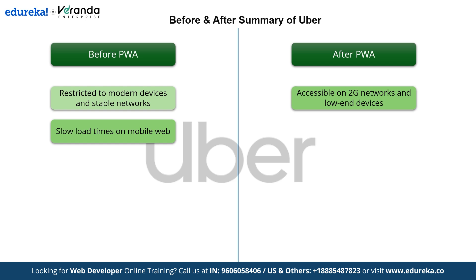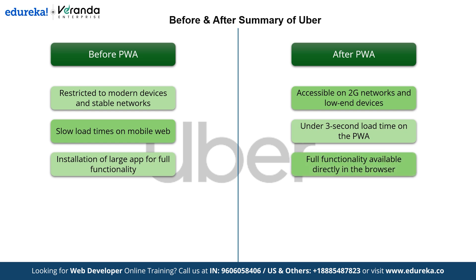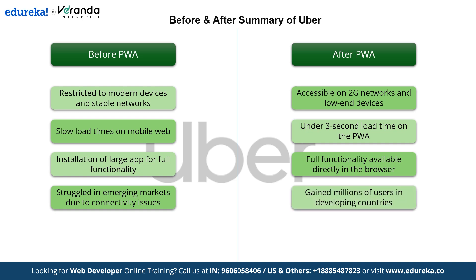Before Uber adopted progressive web apps, the mobile app faced slow load times, frustrating users and leading to a subpar experience. After implementing progressive web apps, load times were dramatically reduced to under 3 seconds, offering users a seamless and fast experience. Before, users had to install a large app to access full functionality, which was inconvenient for those with limited storage space. After implementing progressive web apps, Uber delivered full functionality directly in the browser, removing the need for app installation and enhancing user convenience. Before, emerging markets faced significant challenges due to connectivity issues, making it difficult for Uber to reach their users. After implementing progressive web apps, Uber successfully gained millions of users in developing countries, overcoming connectivity barriers.